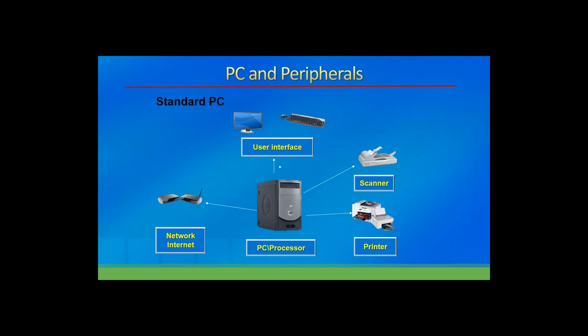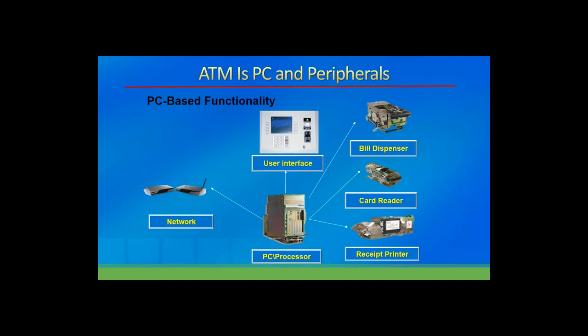Computers in general are just a PC and peripherals. The box on your desk is a personal computer; peripherals are all the devices that plug into that central box. You have a user interface — a screen — a keyboard for consumer input, printers and scanners, all hooked to a network, generally the internet. An ATM is nothing more than a very heavy — sometimes over two thousand pounds — PC and peripherals. Just like your home computer, it has a core processor, a user interface, peripherals in the form of a bill dispenser, card reader, and receipt printer, and it connects to a network.